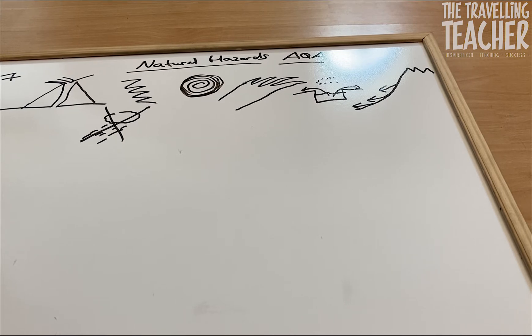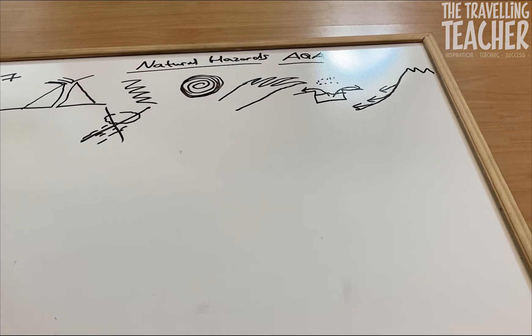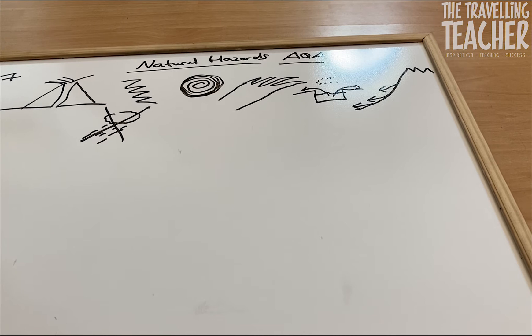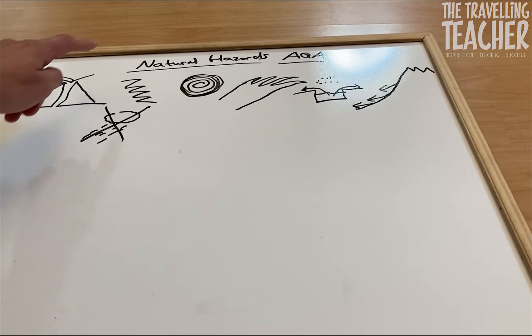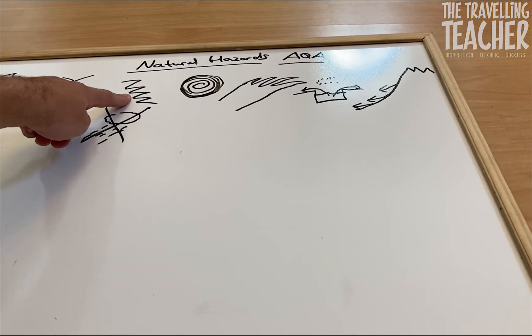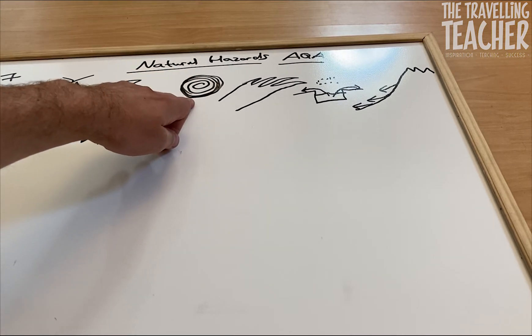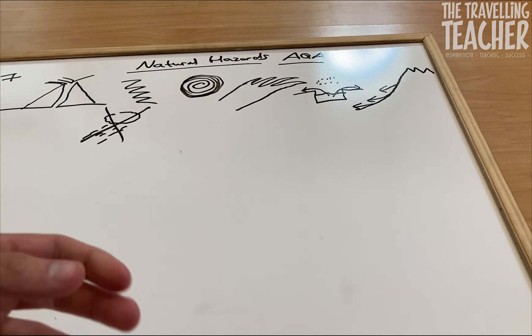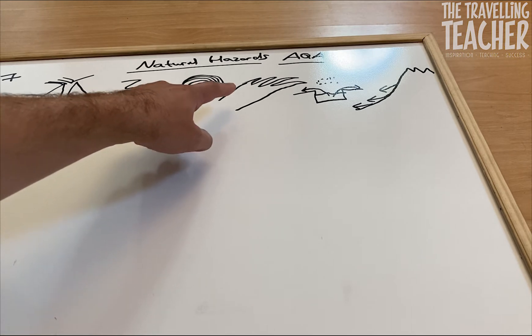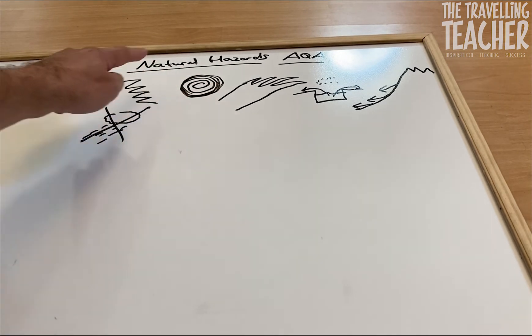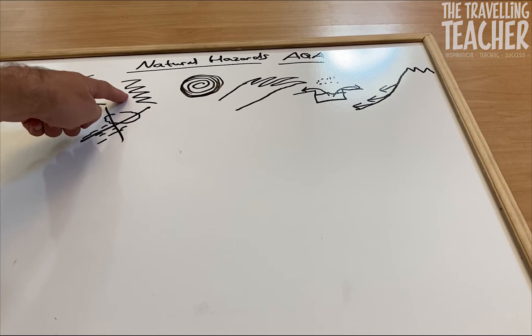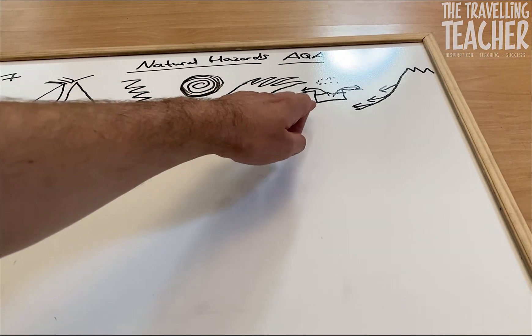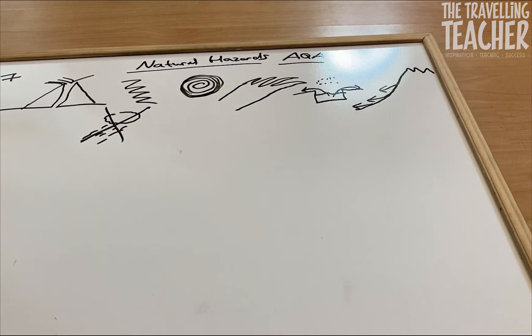So there you go, there's your seven natural hazards which I would recommend being aware of for your exam. So you've got volcanic eruptions, earthquakes, storms such as hurricanes and cyclones, you've got tsunamis which of course is generated by an underwater earthquake, you can have flooding so river flooding, you've got landslides, and droughts.